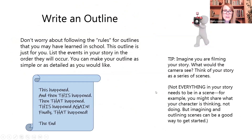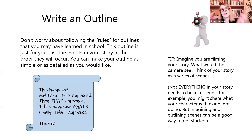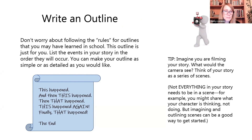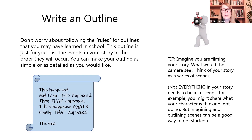Another way — you might do this at the outset or after brainstorming — is to write an outline. You've maybe done outlines in school done in a very particular way, but you don't have to do it formally. You can just make the kind of outline you want to make. This outline is just for you. List the events in your story in the order in which they occur. You can add lots of detail if you want, or keep it really simple. That will give you a sense of direction, kind of like a map, so when you're writing you won't get lost and you'll know where you're heading.